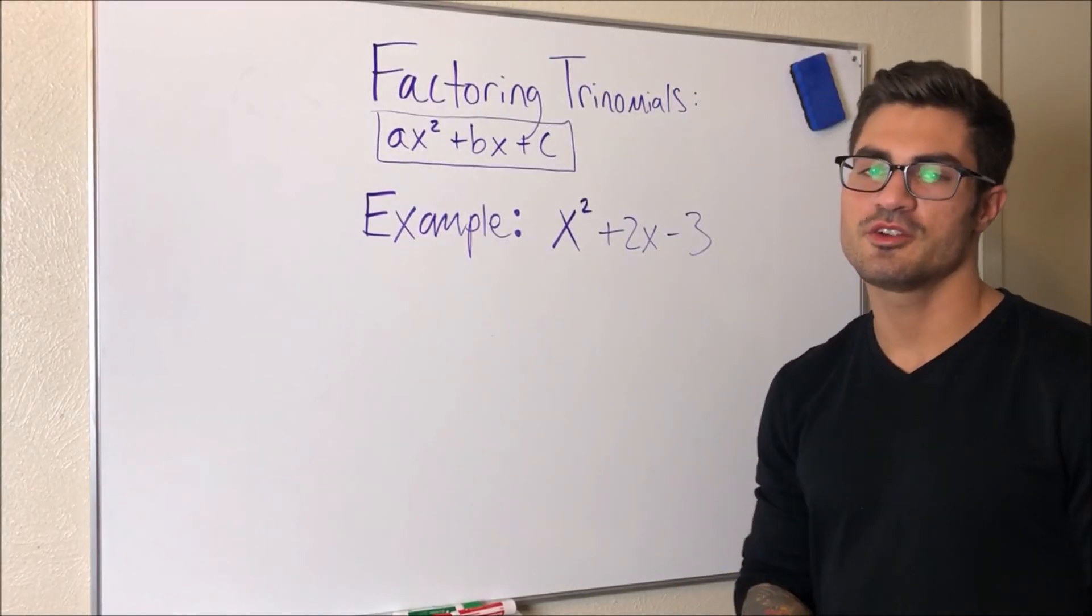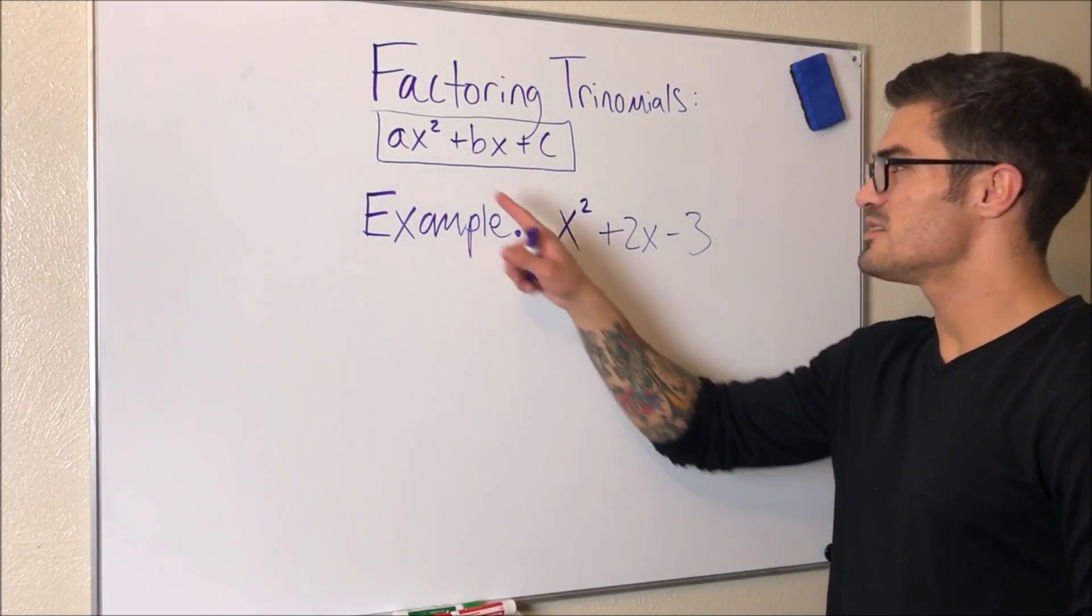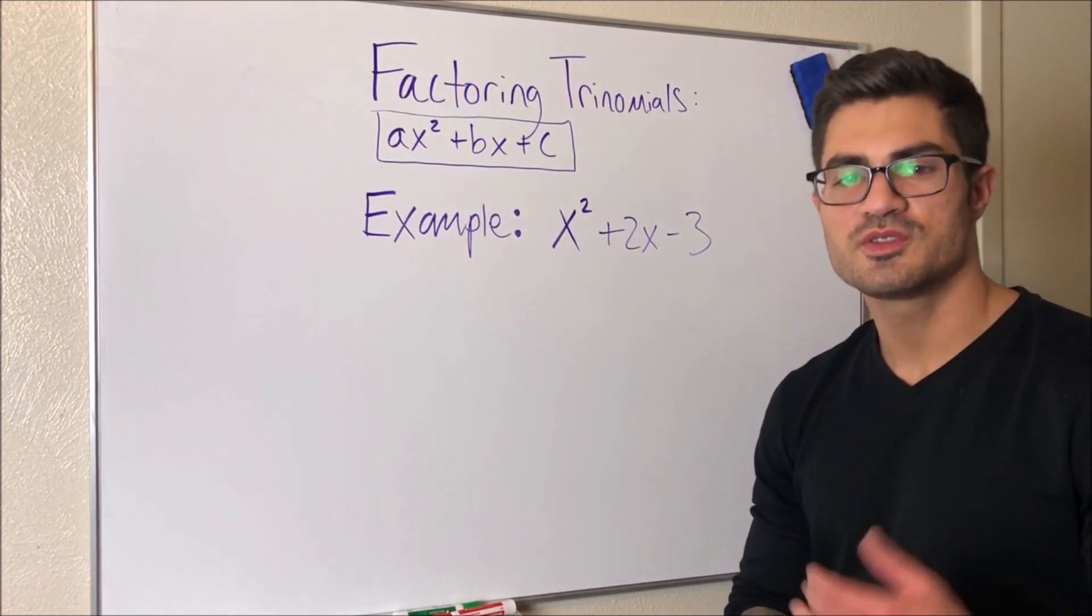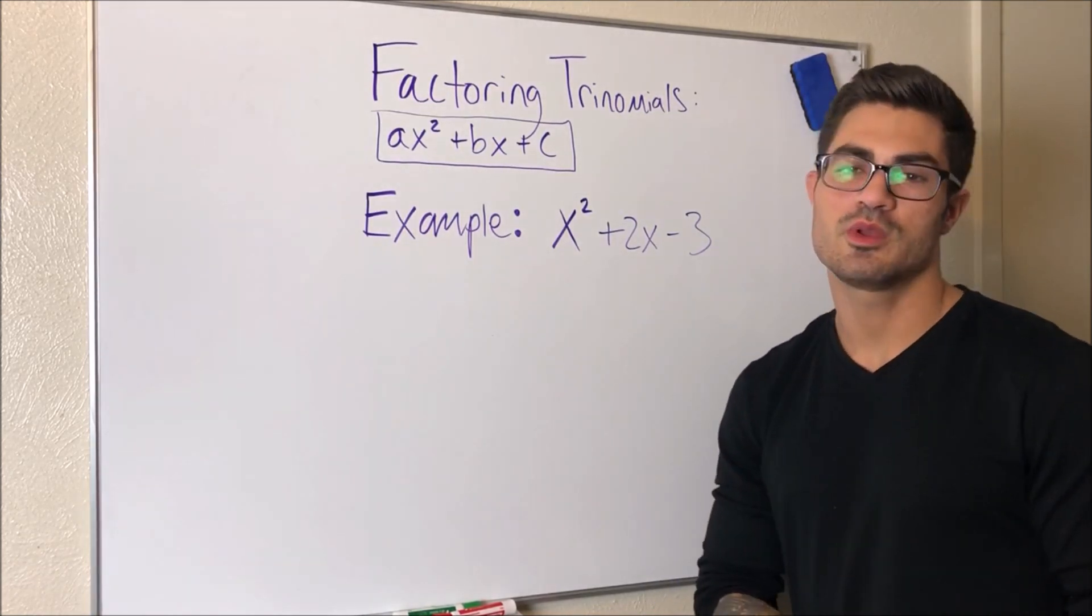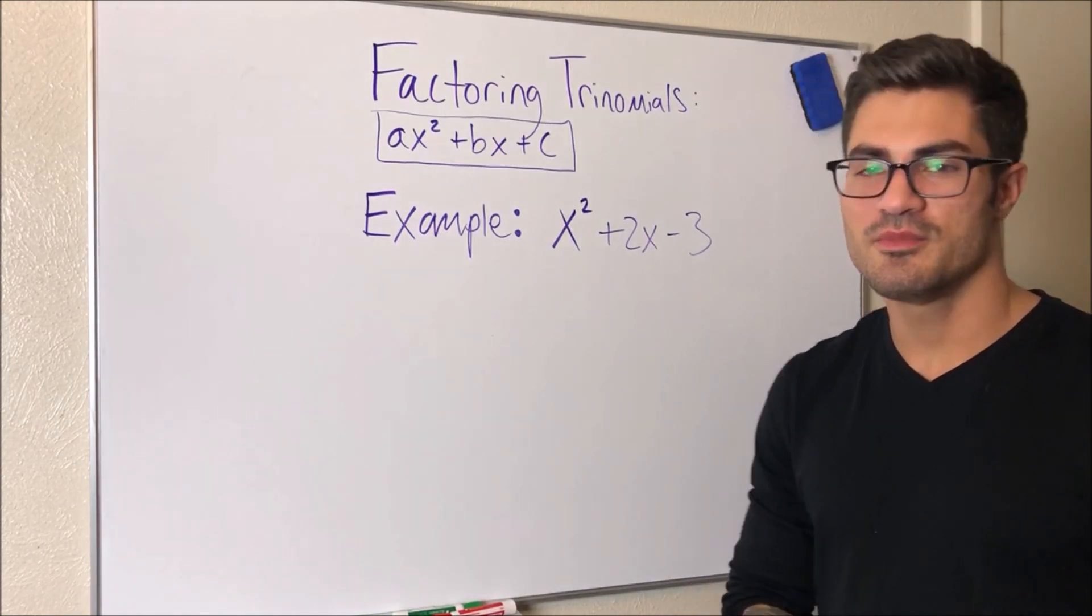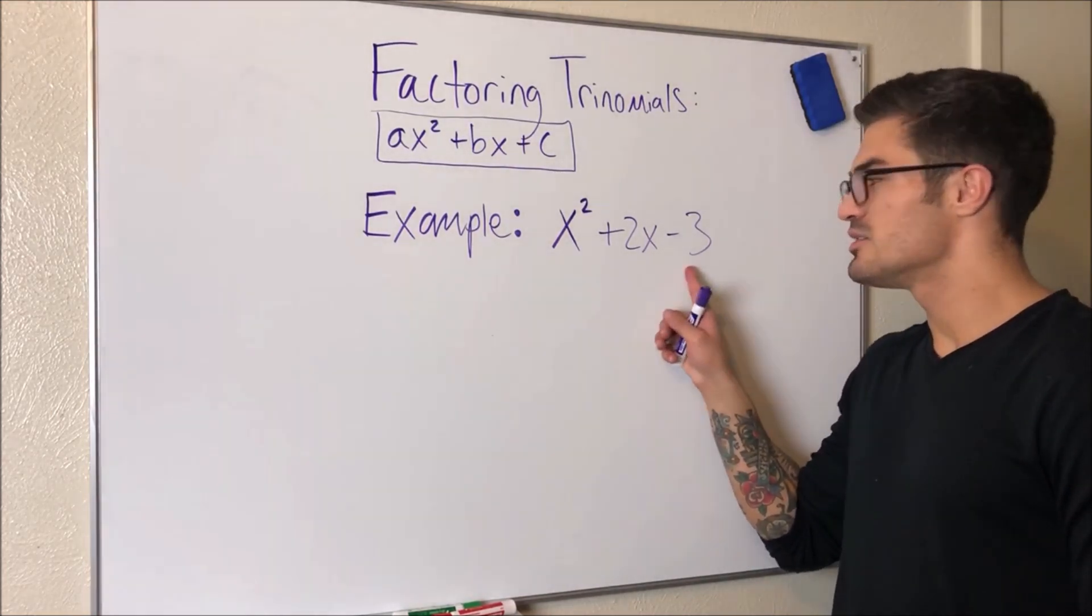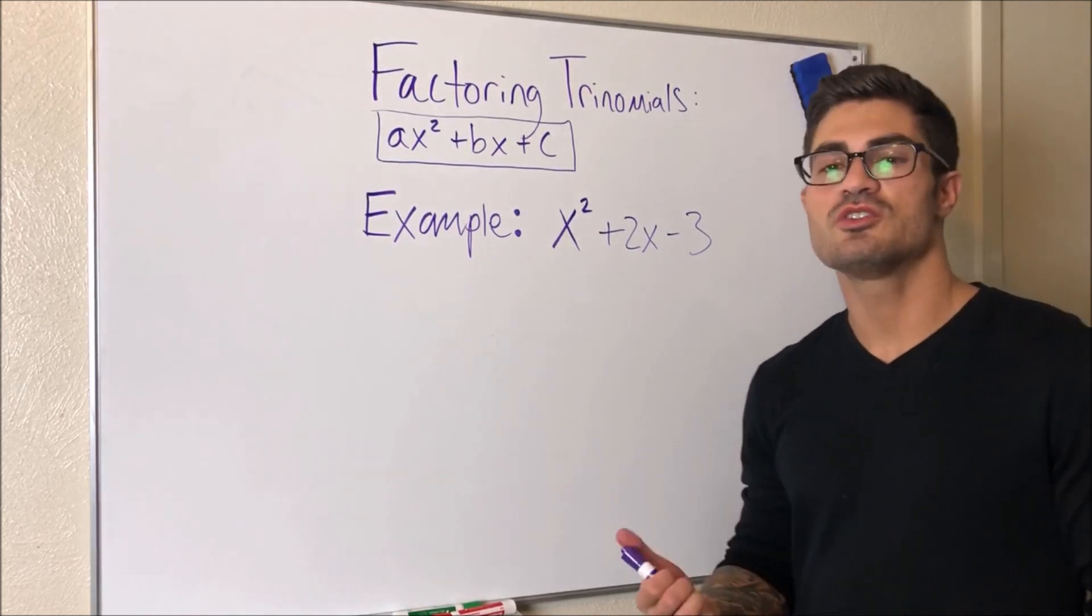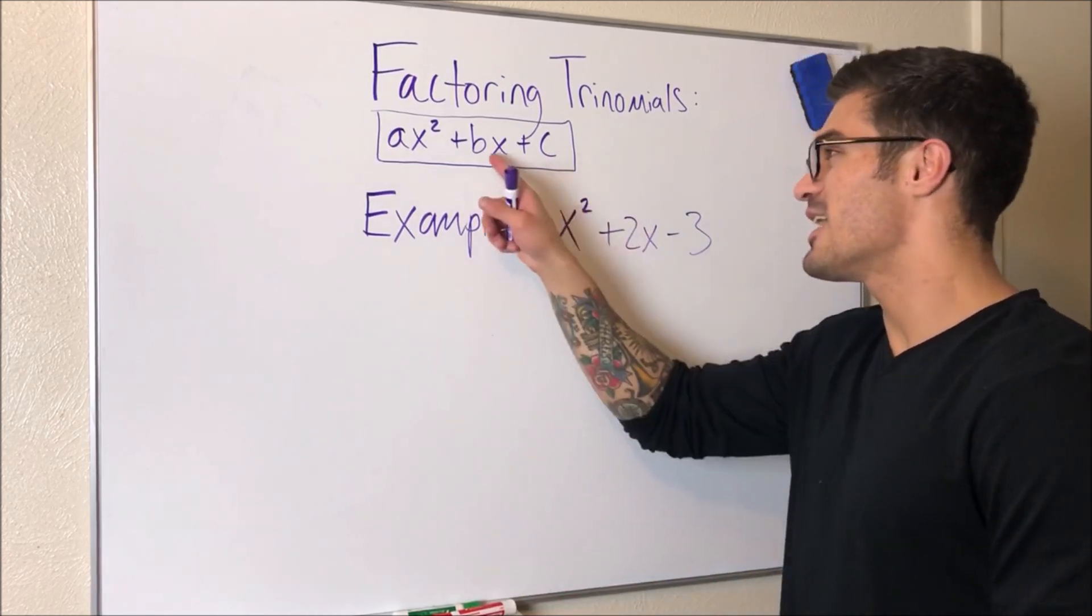So we are asked to factor this trinomial. As we can see, it is a trinomial. It has three terms. And in this case, it's of this form where a equals one. So it follows that case one that we talked about in the beginning of this video. So what we can do is just factor it using that multiply-add method. And what that means is we're looking for two things that multiply together to be negative three and add together to be positive two.